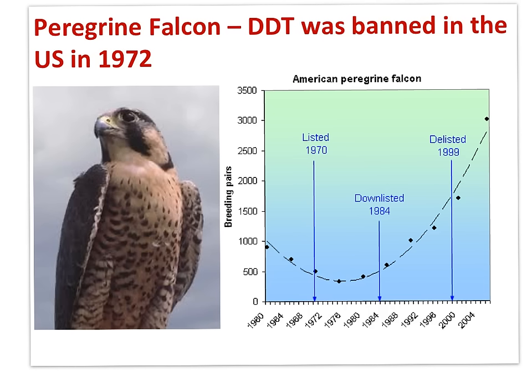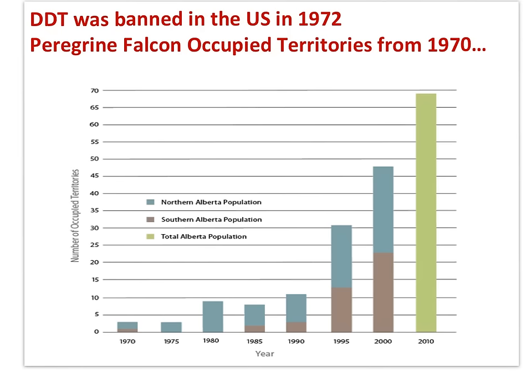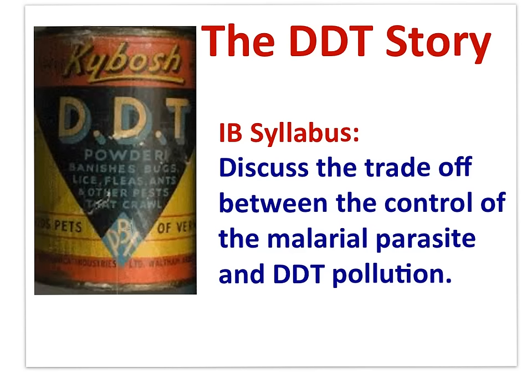Rachel Carson's well-known book titled Silent Spring highlighted the health problems associated with widespread DDT use. DDT was banned in the United States in 1972. As you can see, peregrine falcon populations then rebounded. This graph shows the number of territories occupied by the peregrine falcon across time, and from 1972 when DDT was banned in North America, peregrine falcon populations increased dramatically.